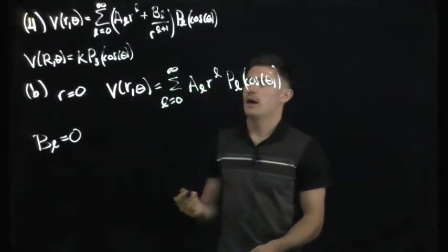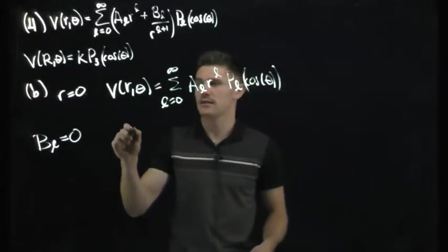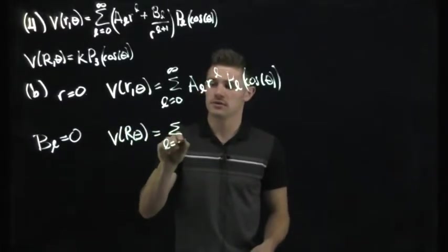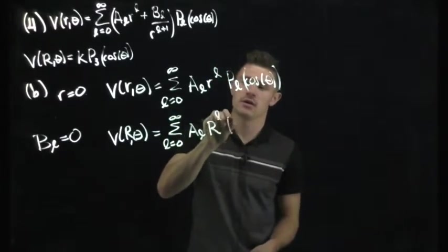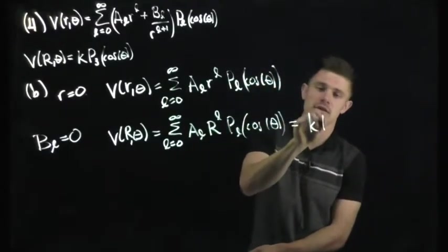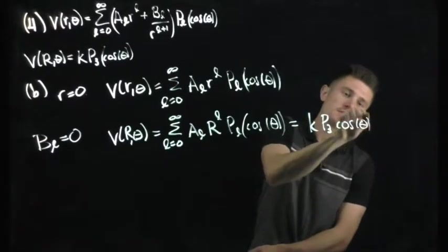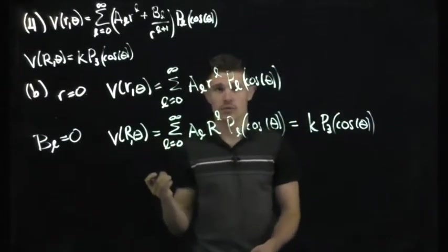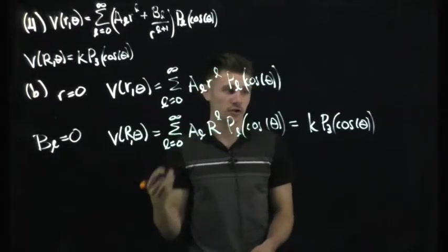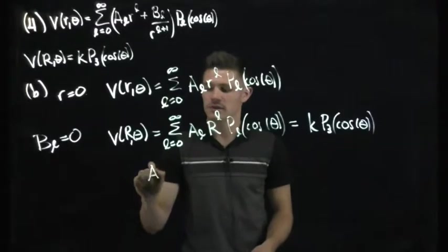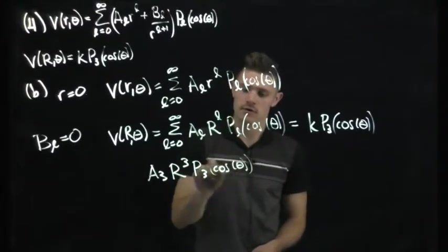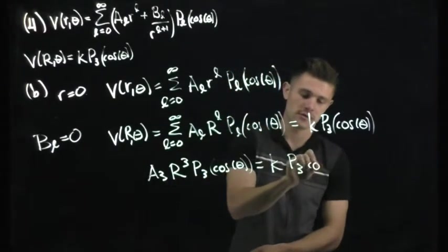Now we apply the boundary conditions. Setting r = R (the sphere's radius), we have the sum from L=0 to infinity of A_L · R^L · P_L(cosθ) equal to K·P₃(cosθ). Due to the orthogonality of Legendre polynomials, only the L=3 term survives. So we consider only A₃ · R³ · P₃(cosθ) = K · P₃(cosθ).